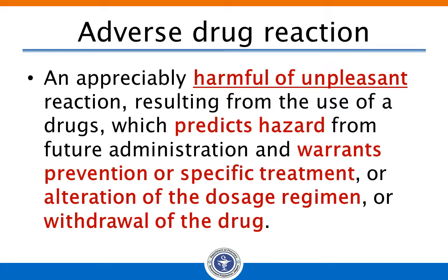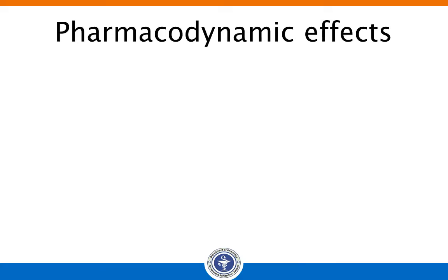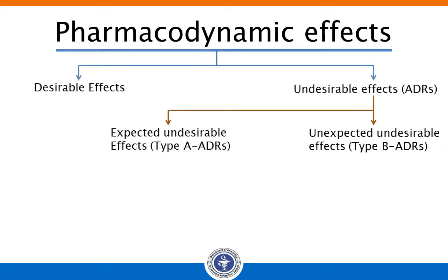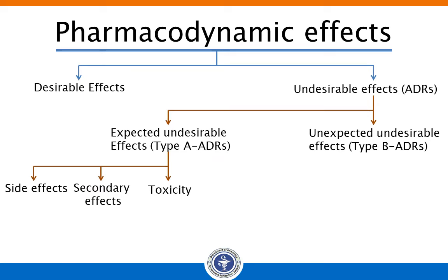The pharmacodynamic effects of drugs are summarized here. Drugs can produce two types of effects: one is desirable and another is undesirable. The undesirable effects of drugs are also stated as adverse drug reactions. These are classified into two types: one is expected, which is totally known from the pharmacological aspects of the drugs, and another is unexpected undesirable effects, categorized as type B ADR.